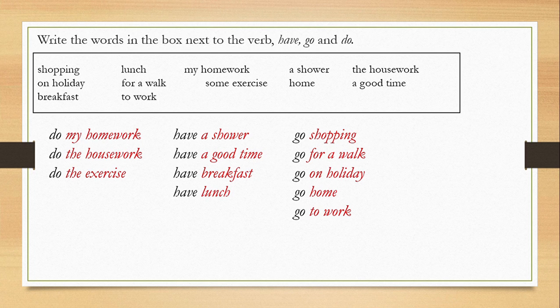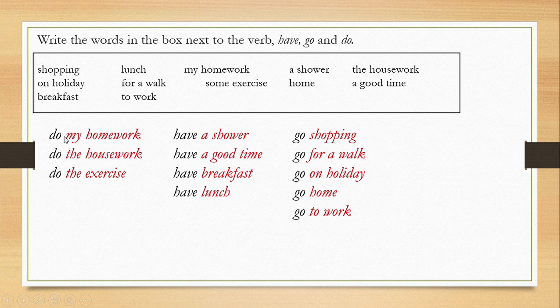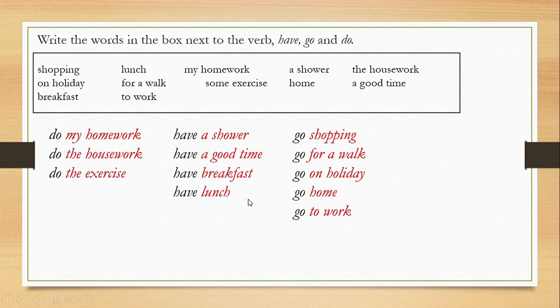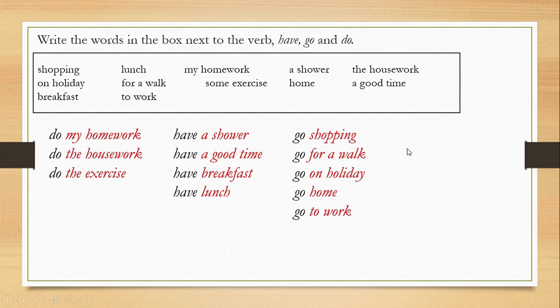This verb do, have, go - you have to remember that you cannot use do a shower, you cannot use do breakfast or do lunch. So when you want to have lunch or you want to have breakfast, you have to use the word have here. And go. You can see as an example here.